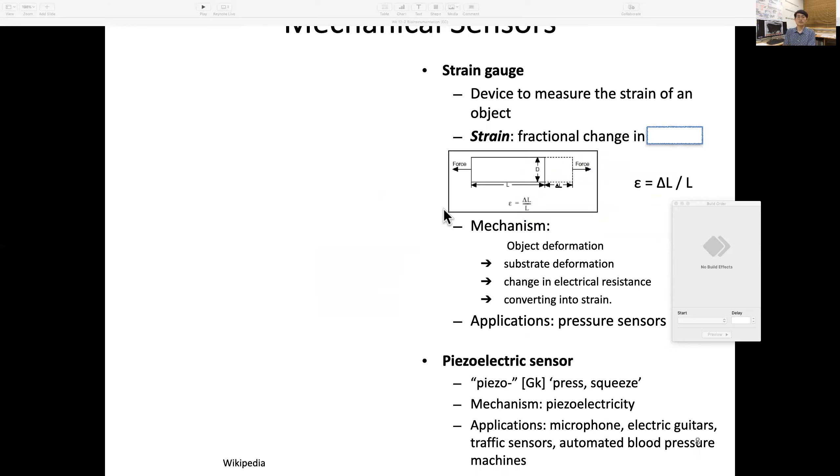Now let's move on to mechanical sensors. Usually, mechanical sensors refer to strain gauges. What is strain? We need to define strain first. When there's a mechanical element and you pull it with force, it's likely to elongate.